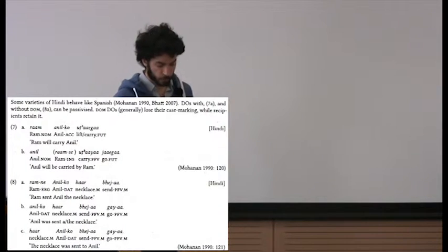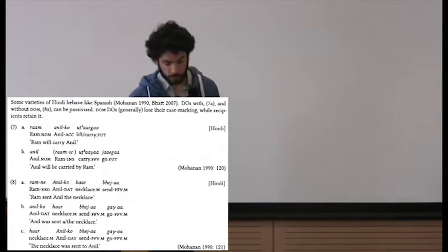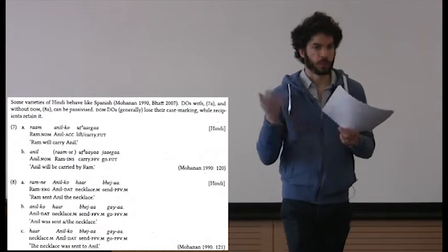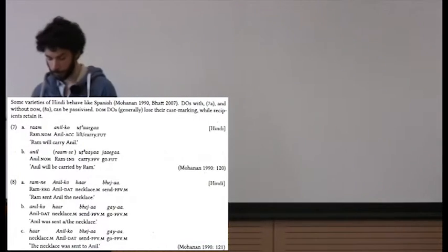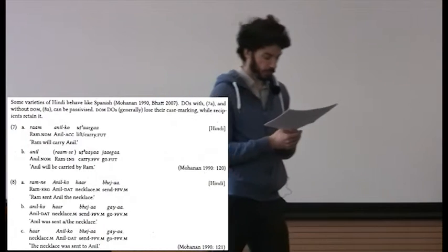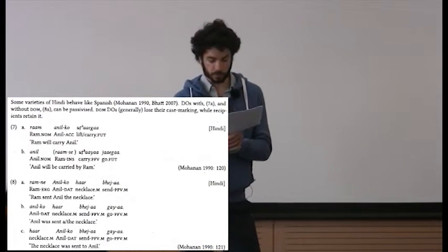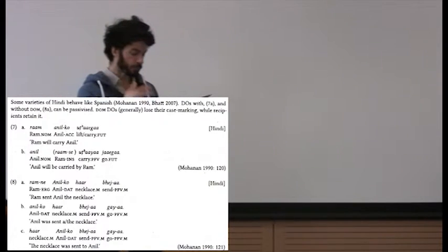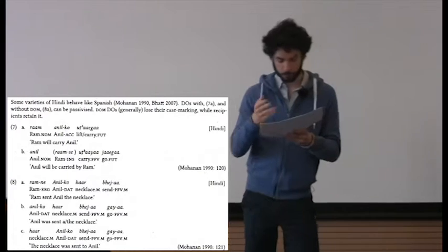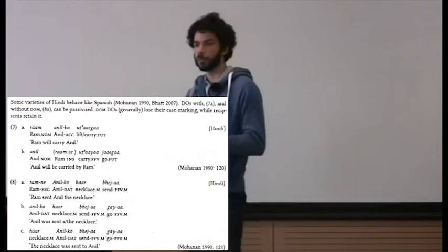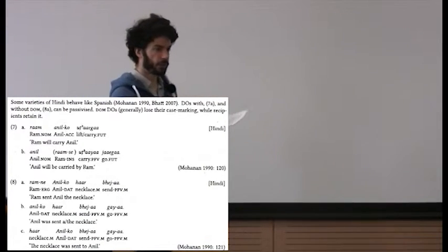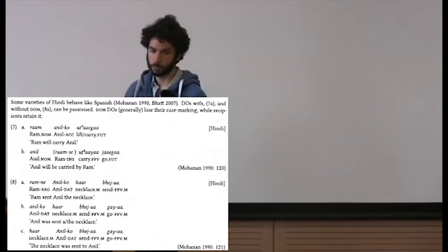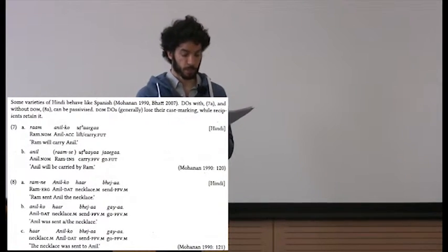Turning to Hindi, in 7a we have the active sentence 'Ram will carry Anil,' and 7b shows the direct object can be passivized: 'Anil will be carried by Ram.' In example 8a we have the active ditransitive 'Ram sent Anil the necklace,' and 8b and c show this can be passivized in both ways — with the dative or the absolutive in first position. What's crucial is that the recipient retains its dative case in 8b, whereas themes don't retain their accusative, as seen in 7b. Even though the 'ko' suffix is homophonous for both types of objects, they behave distinctly in passivization.